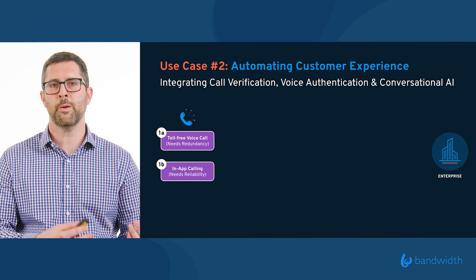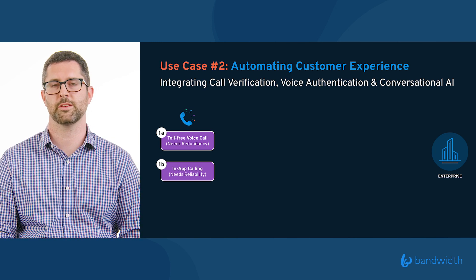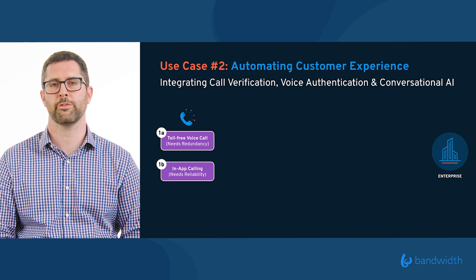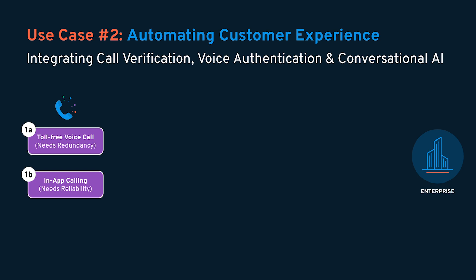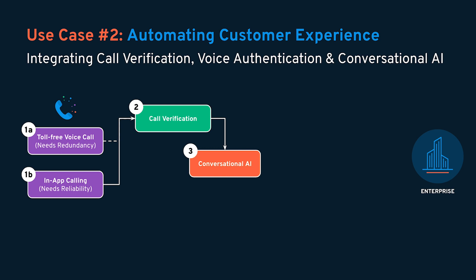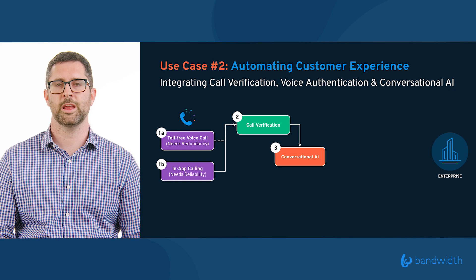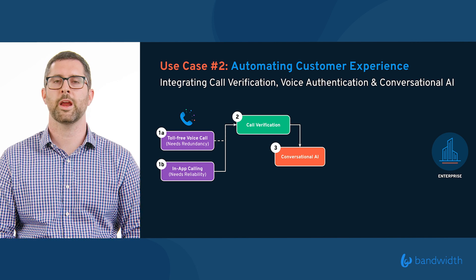We connect to our core network and route that call to any of the pre-configured integrations that a contact center or enterprise wants to build into their flow. In this example, we send the in-app call to call verification — it picks up the fraud or spoof likelihood score using metadata — and then introduces it to a conversational AI chatbot. These are chatbots of the enterprise's choosing, any number of leading best-in-class tools where we've done the work to pre-integrate, so you don't have to. This company was looking at introducing conversational AI to automate the customer experience, building AI-driven chatbots so callers can interact with virtual agents and resolve issues in a self-service capacity.